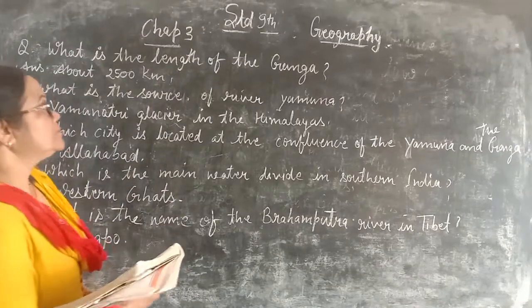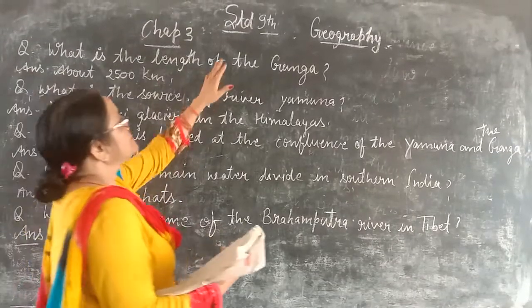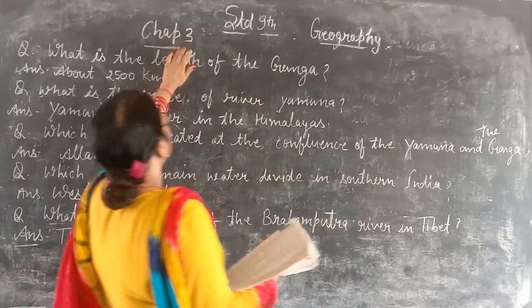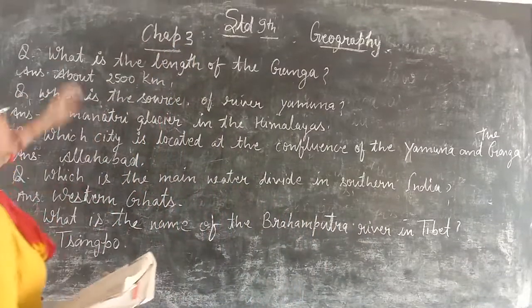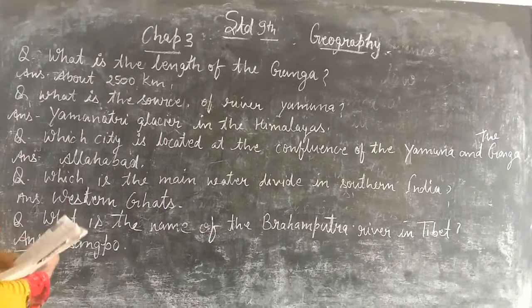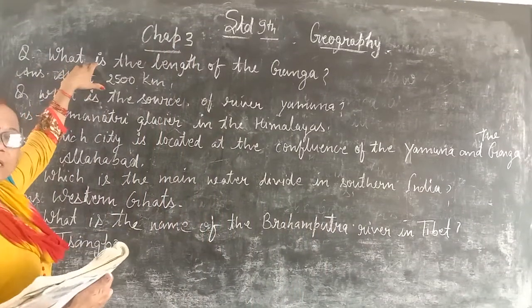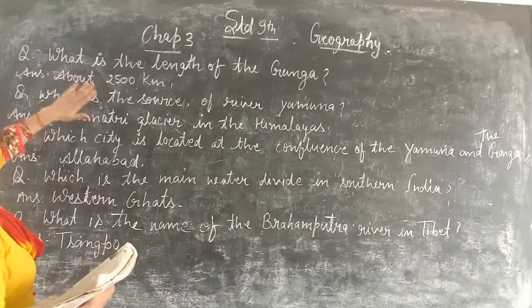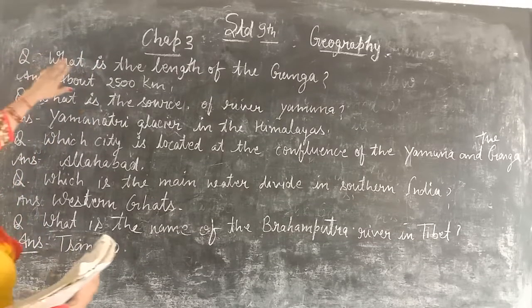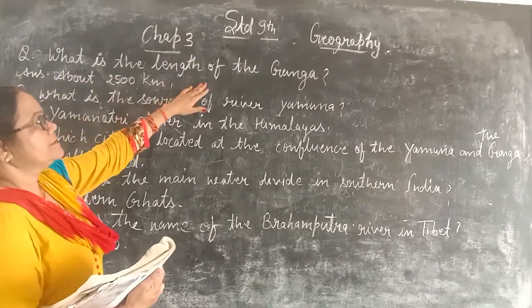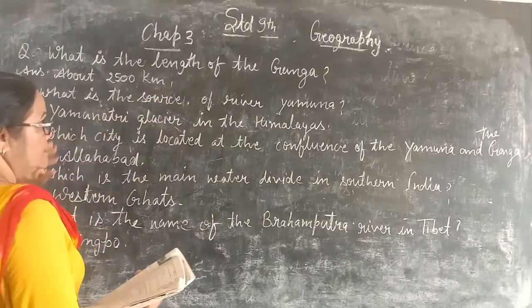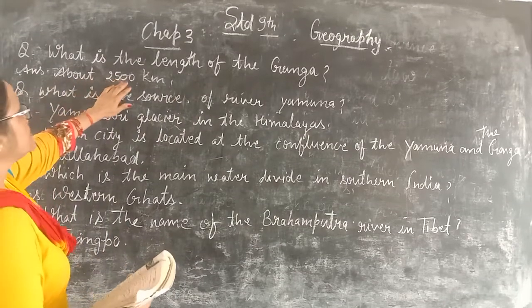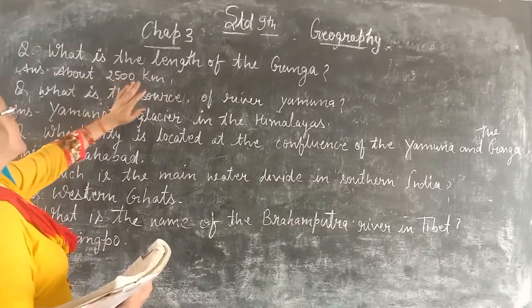Good morning students. Chapter 9, Geography Chapter 3 Short Answer. The first question you have to answer is: what is the length of the land? The land is about 2500 kms.